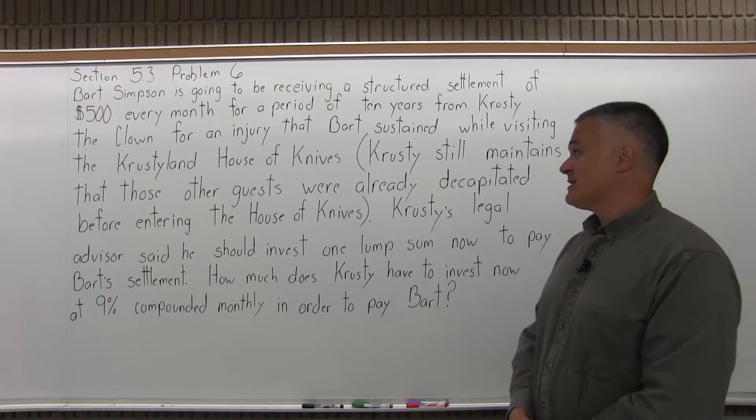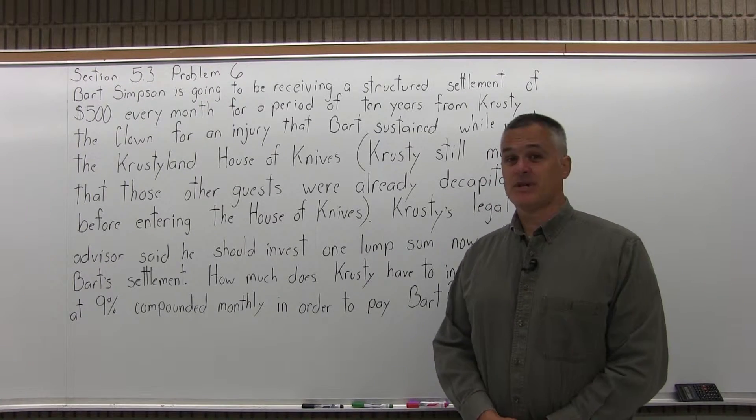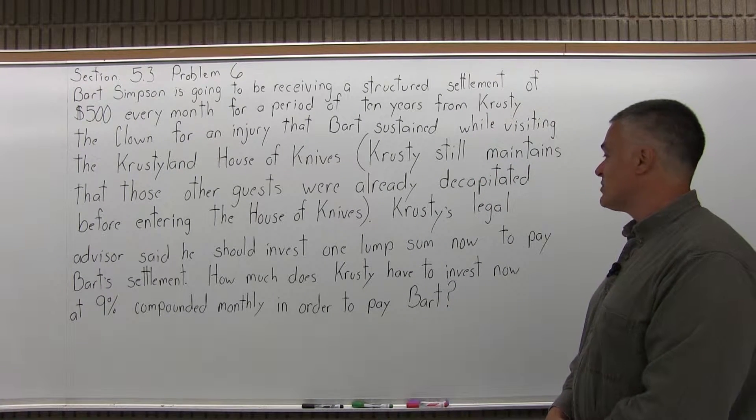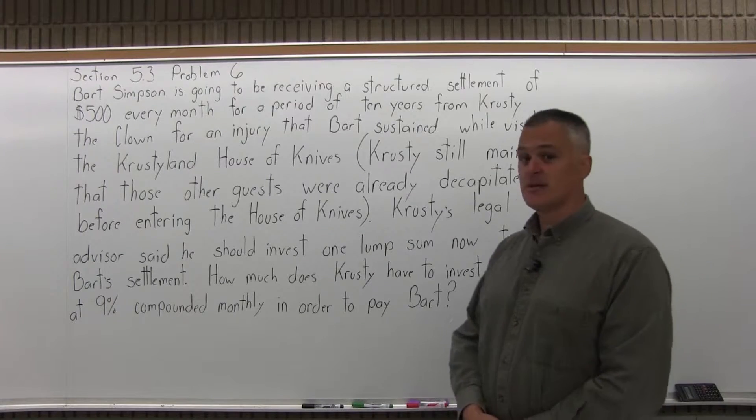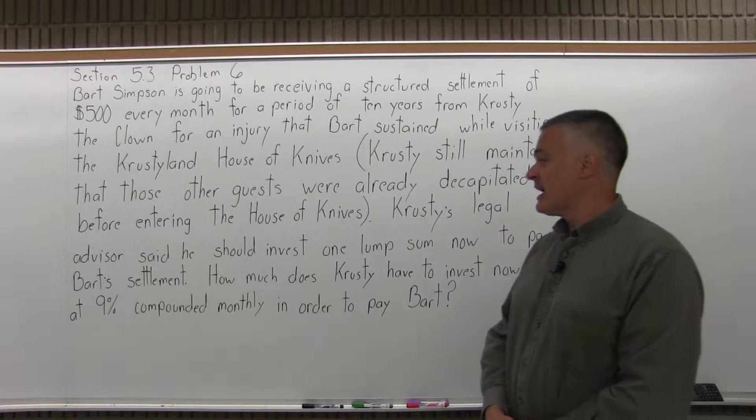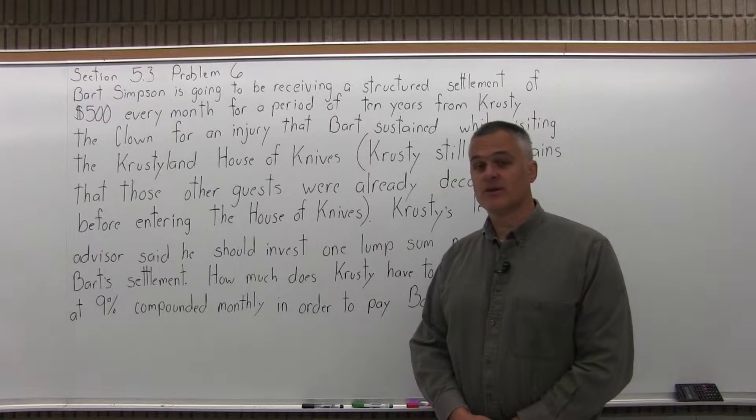Krusty still maintains that those other guests were already decapitated before entering the House of Knives. Krusty's legal advisor said he should invest one lump sum now to pay Bart's settlement. How much does Krusty have to invest now at 9% compounded monthly in order to pay Bart?